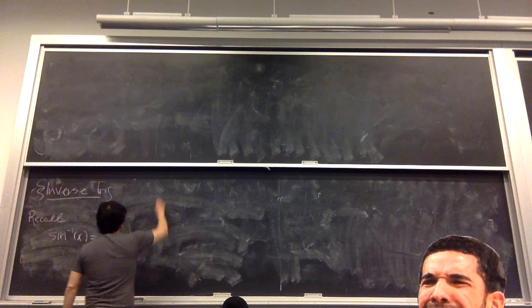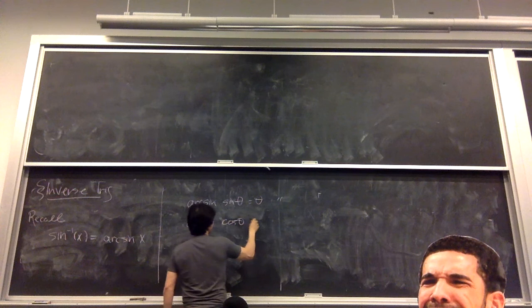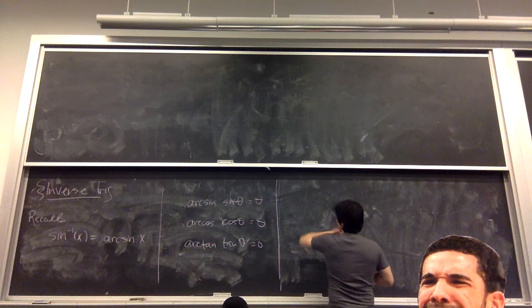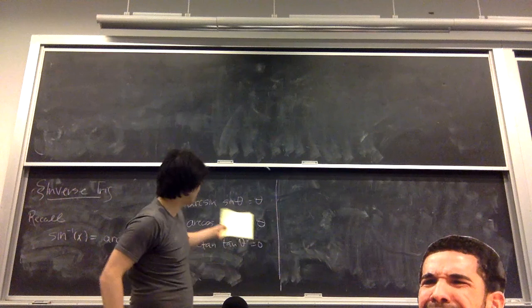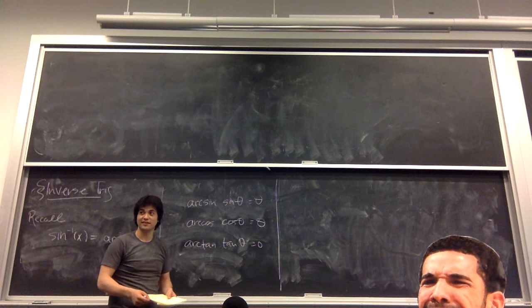So arc sine of sine of theta is theta. Arc cos of cos of theta is theta. And arc tan of tan of theta is theta. Now, can anyone guess what my next question is going to be? What have we been doing all of this time? Developing rules for derivatives. Do we have rules to take derivatives of sine functions and cos functions and tans? Do we have rules for their inverses? No. Can we get rules for their inverses? Yes, because I just taught you how to get inverses of functions.